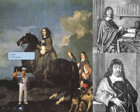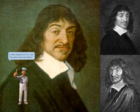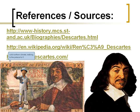In 1649, Queen Christina of Sweden persuaded Descartes to go to Stockholm. However, the queen wanted to draw tangents at 5 a.m., and Descartes broke the habit of his lifetime of getting up at 11 o'clock. After only a few months in the cold northern climate, walking to the palace at 5 o'clock every morning, he died of pneumonia.